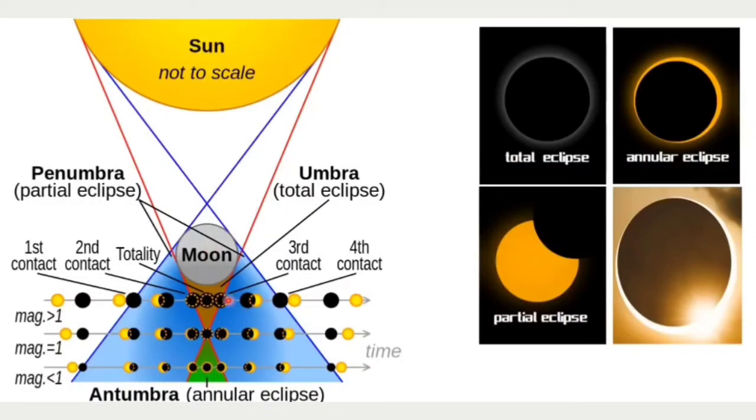But depending upon the distance of the moon, if the moon is very close to Earth, then obviously it will completely cover the sun and we will see a total eclipse. But if the moon is a bit farther from Earth in its orbital cycle, we will not be able to see a complete solar eclipse.